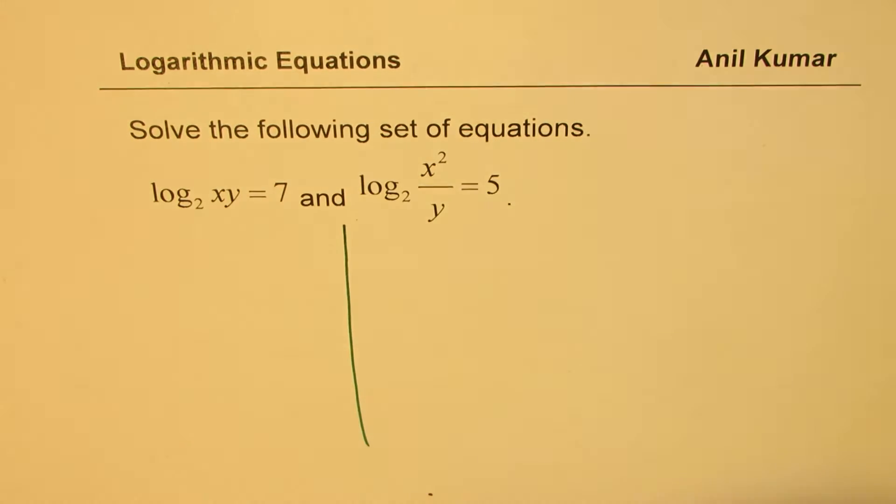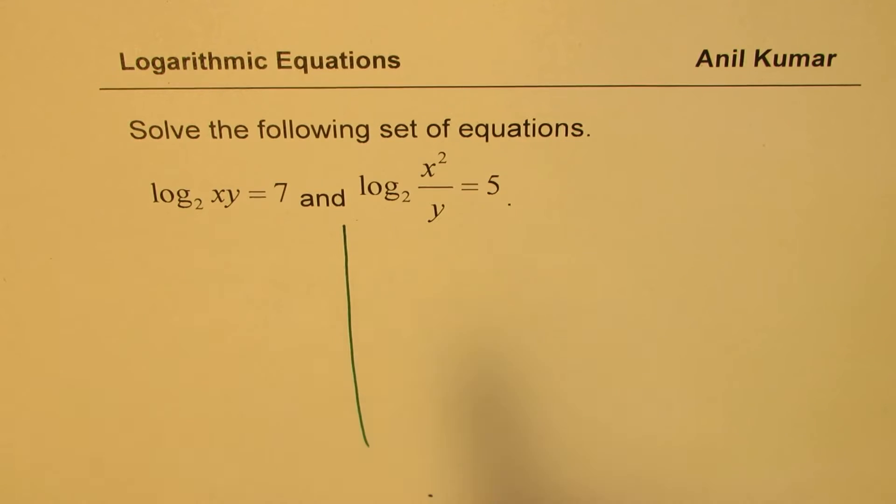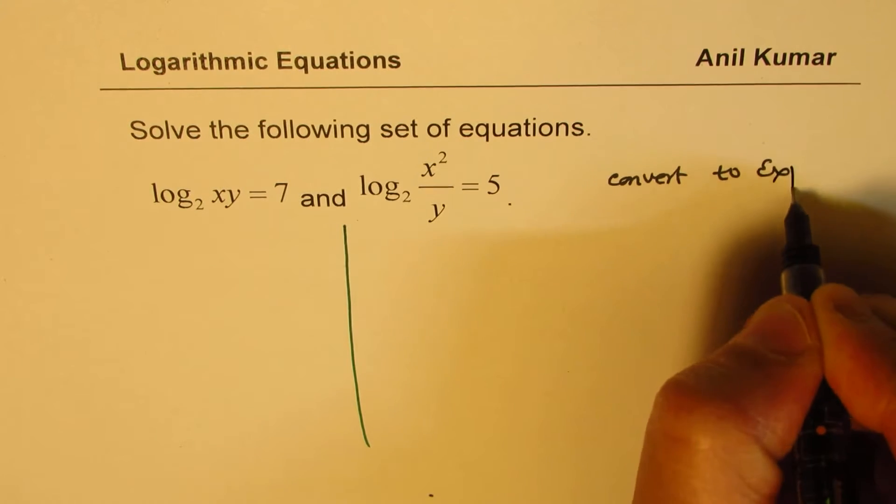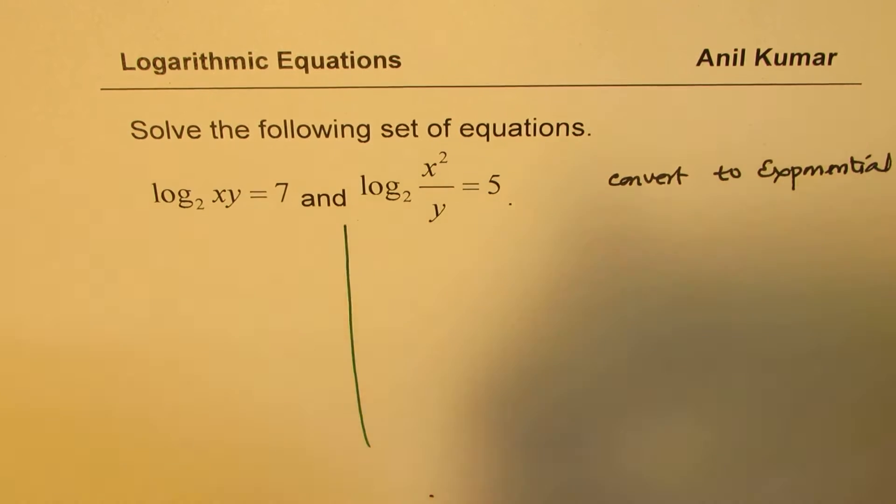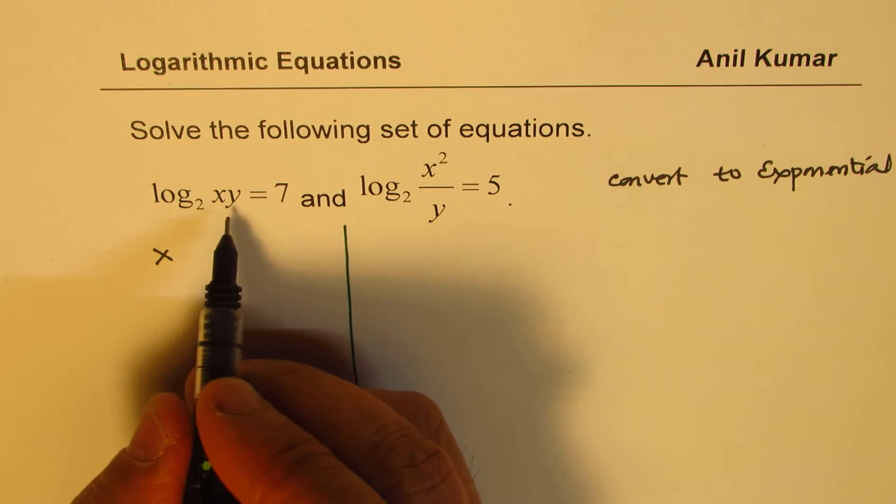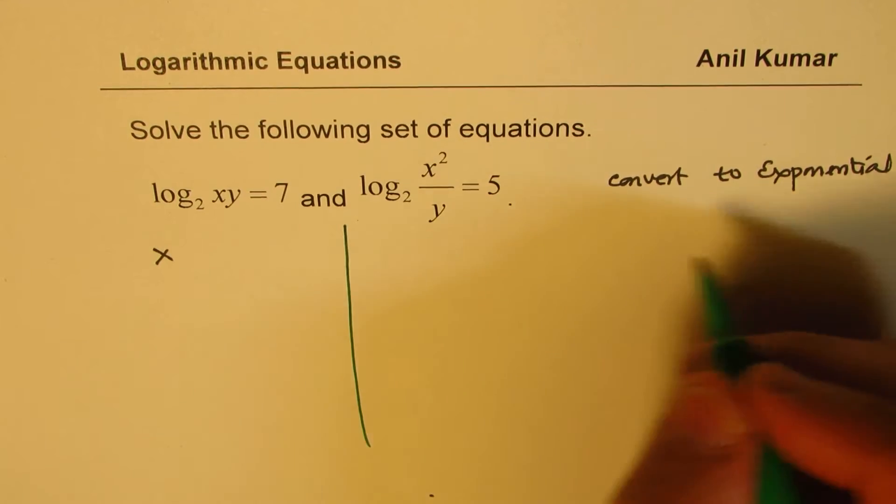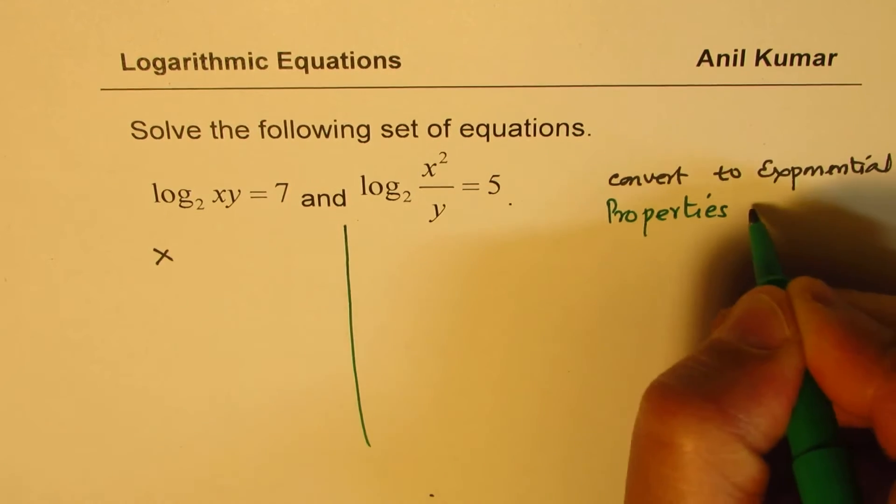Now let's try to convert these logarithmic equations into exponential equations. So first step should be convert to exponential equations. This base 2 will go there and we get xy equals 2 to the power of 7. But a better way will be, instead of writing to exponential forms, we could do properties of logarithms.